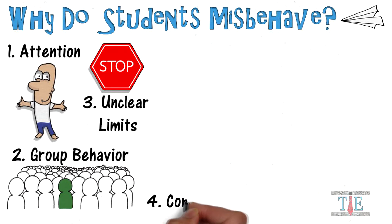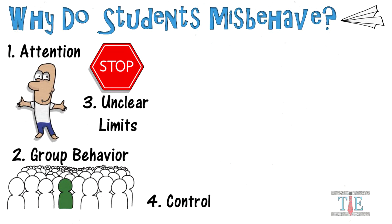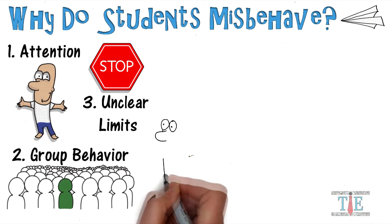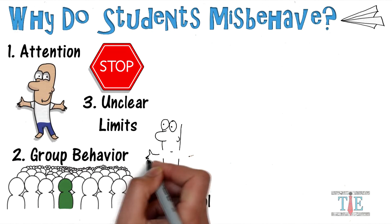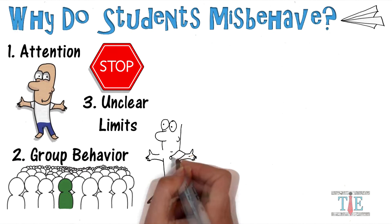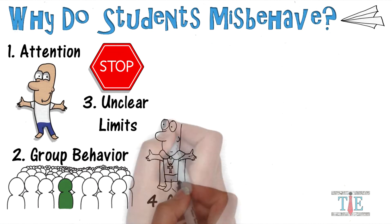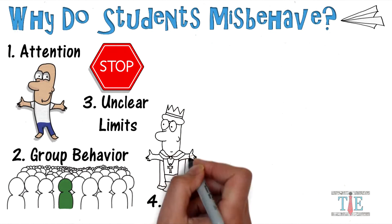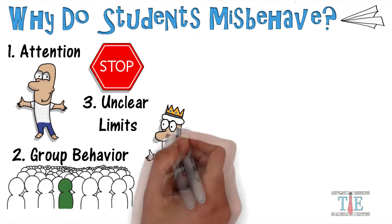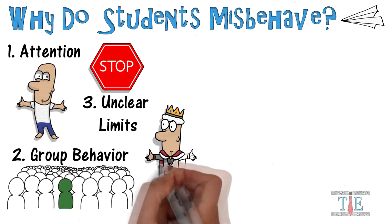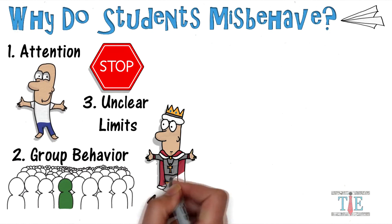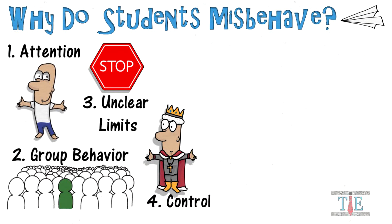Number four: the battle for control. You'll find that in every classroom there's going to be a student that constantly challenges your authority. They misbehave for power, or simply because they feel as though the teacher doesn't have a right to tell them how to behave.